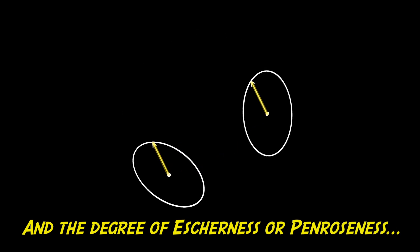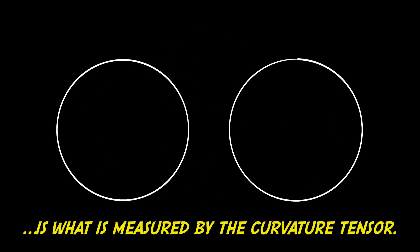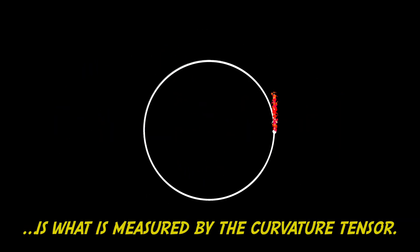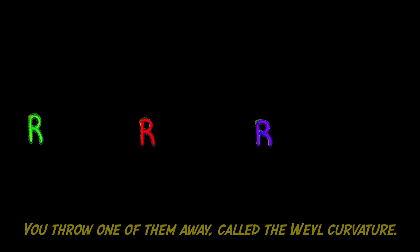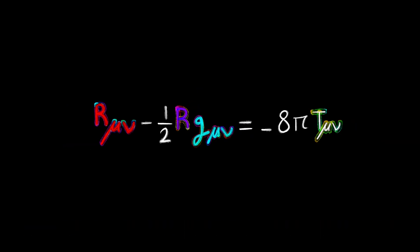And the degree of Escherness or Penroseness is what is measured by the curvature tensor, which breaks into three pieces. You throw one of them away called the Weyl curvature, and you readjust the proportions of the other two.